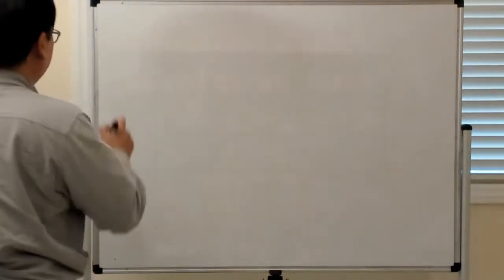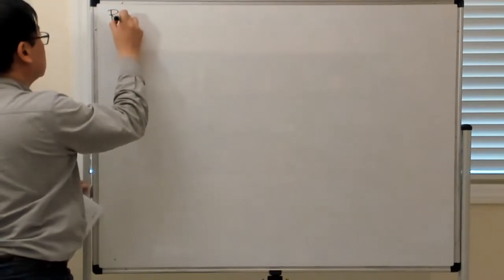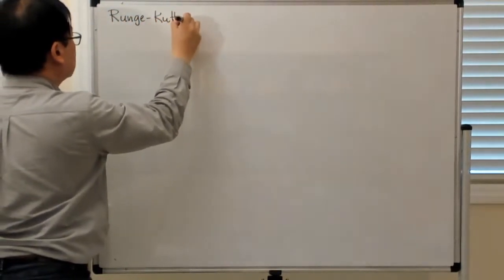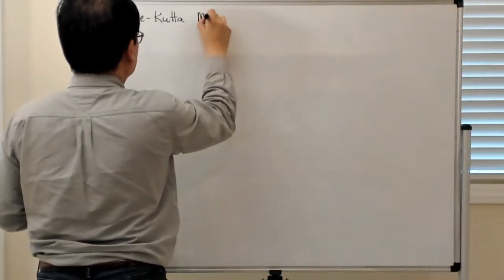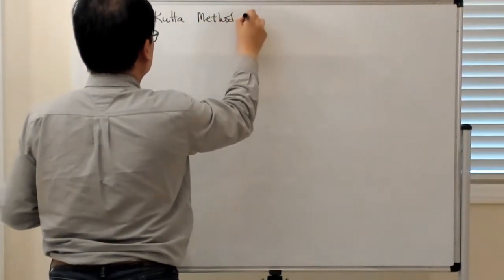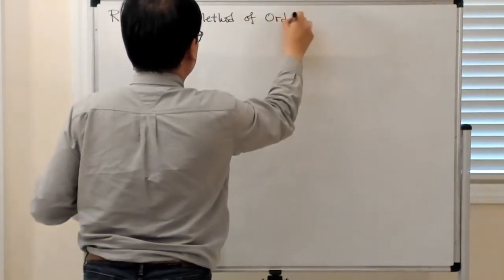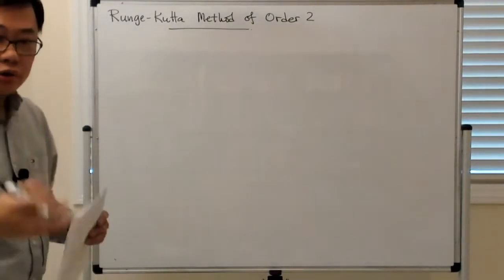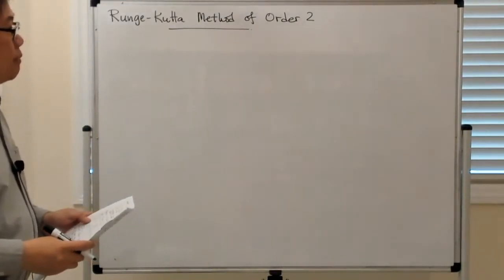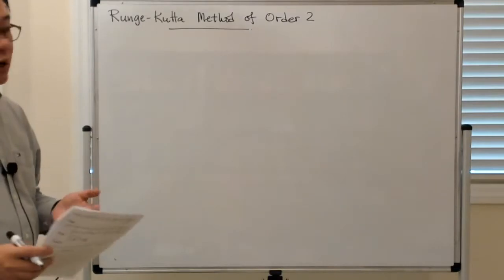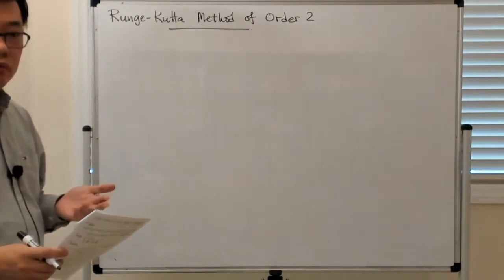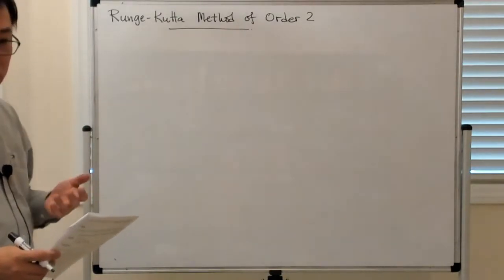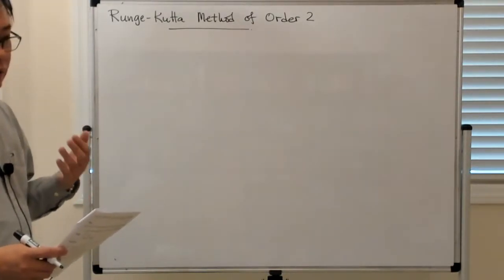Now we're going to talk about Runge-Kutta methods. The basic idea behind Runge-Kutta methods is an attempt to construct higher-order numerical methods, but in a way which only relies on knowing the vector field, as opposed to what we had with the higher-order Taylor methods where you needed to compute the implicit derivative.